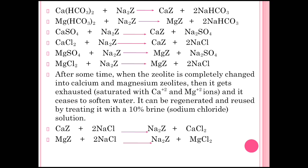When the capacity of exchanging ions with hardness salts is exhausted, it is called exhausted zeolite. Exhausted zeolite can be regenerated using a 10% brine solution (10% NaCl solution). When calcium zeolite reacts with sodium chloride, regeneration of sodium zeolite occurs.